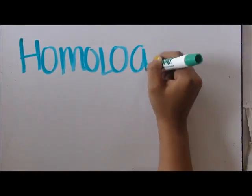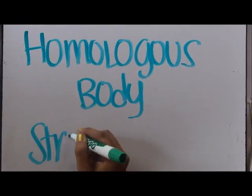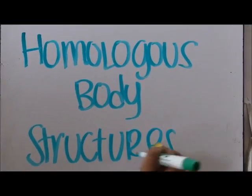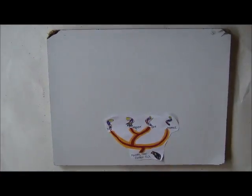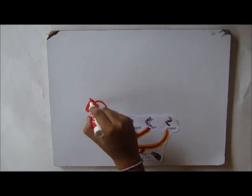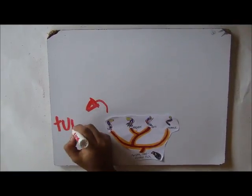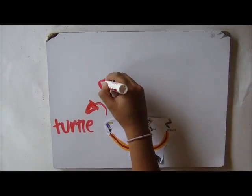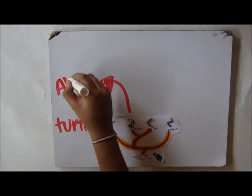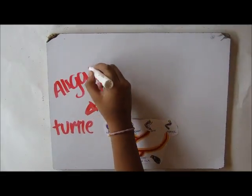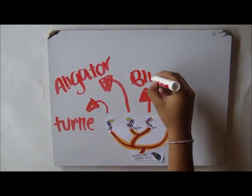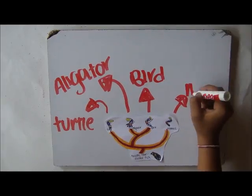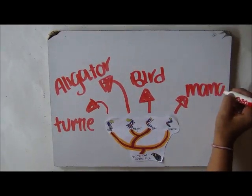One of these results is called homologous body structures. Homologous body structure is when a group of organisms have a common ancestor. They don't have to be physically common, but their bone structure should be alike, as shown on the screen.